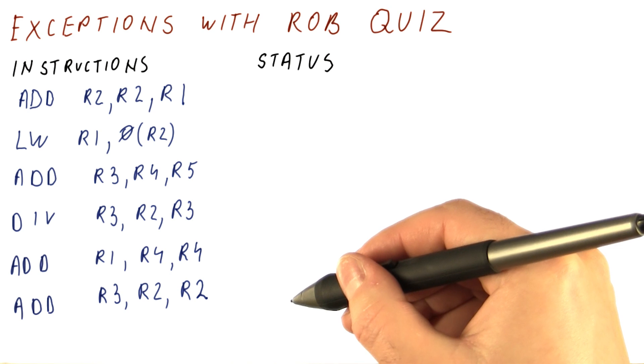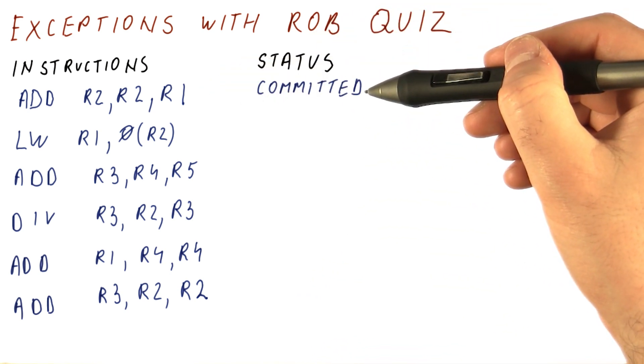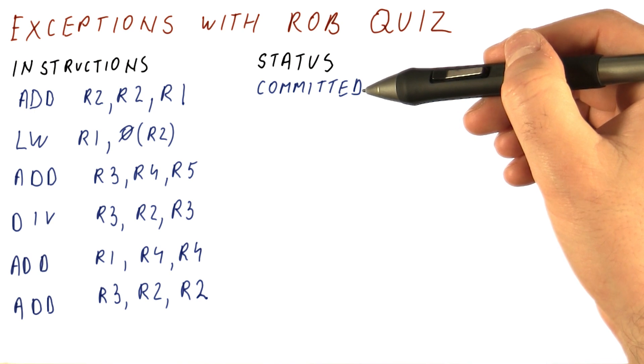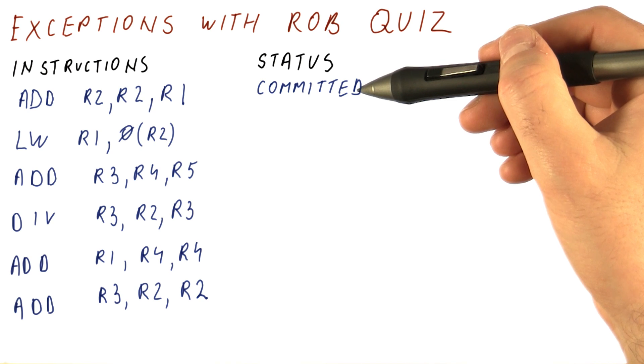Let's say that this is the current status of these instructions. The add is committed, meaning it has exited the pipeline and its results have been committed from the ROB to the register file and so on.